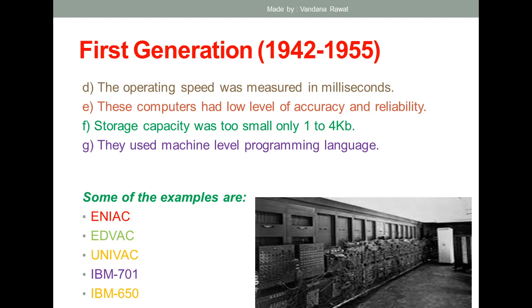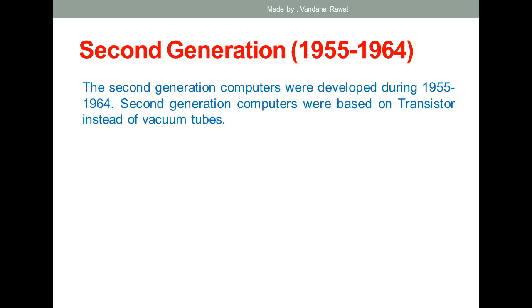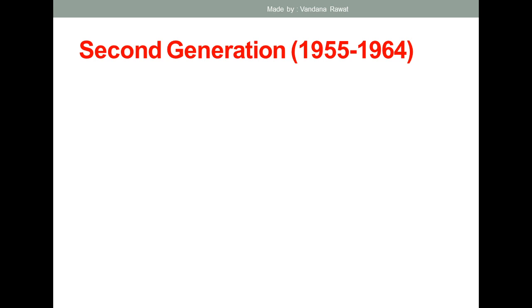Examples of first generation computers include ENIAC, EDVAC, UNIVAC, IBM 701, and IBM 650. These are some examples of first generation computers.